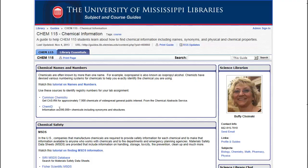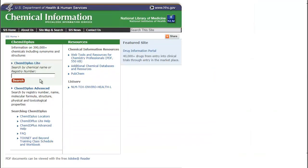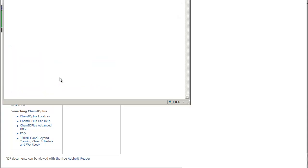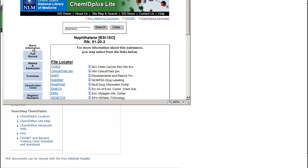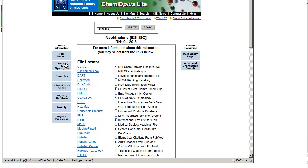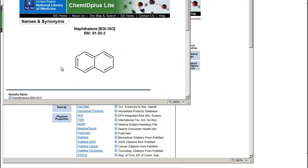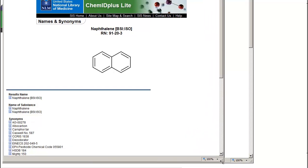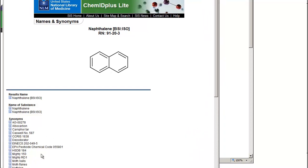The ChemID database works much the same way. Enter the name of your chemical. Choose the entry that represents your chemical. On the results page, click names and synonyms. You will see the registry number, molecular structure, and any available synonyms.